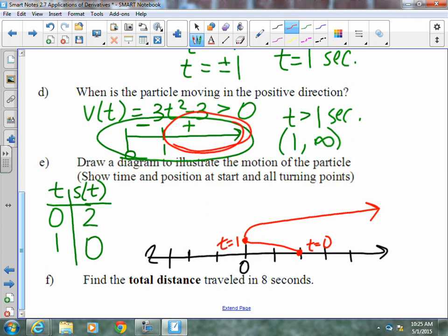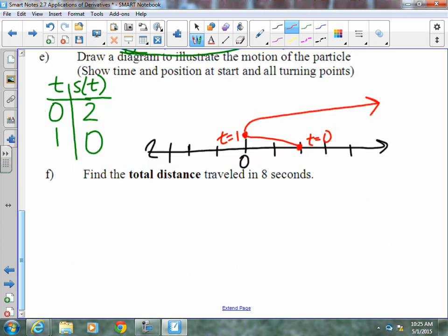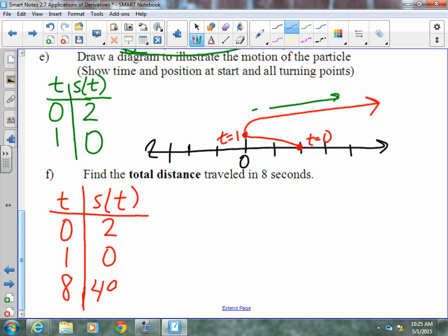To find the total distance traveled in 8 seconds, we have to take into consideration where it started. Where it was when it turned, and they want the total travel distance in 8 seconds. We know after 1 second, all of this particle does is continue to move right, so we just need to know how far it gets at 8 seconds. When you plug an 8 into the position function, you get 490.